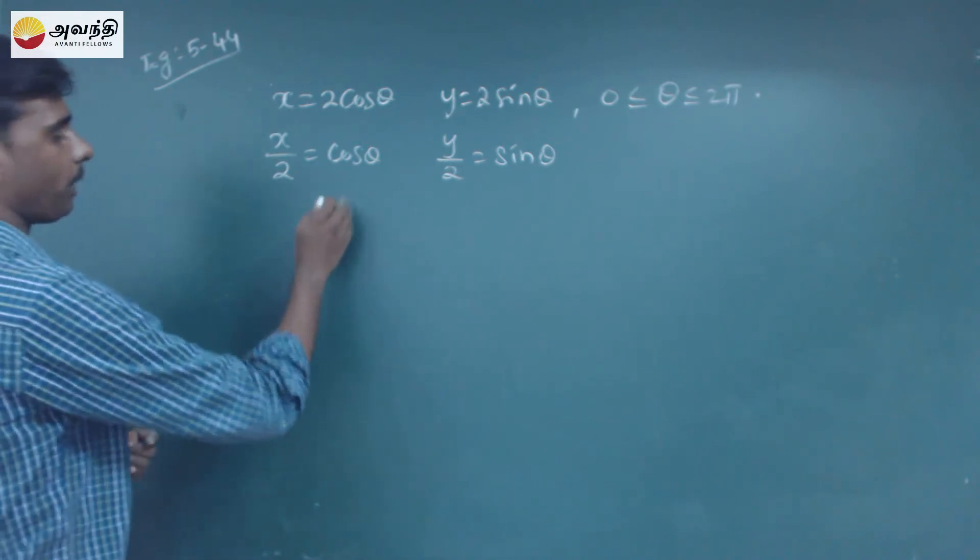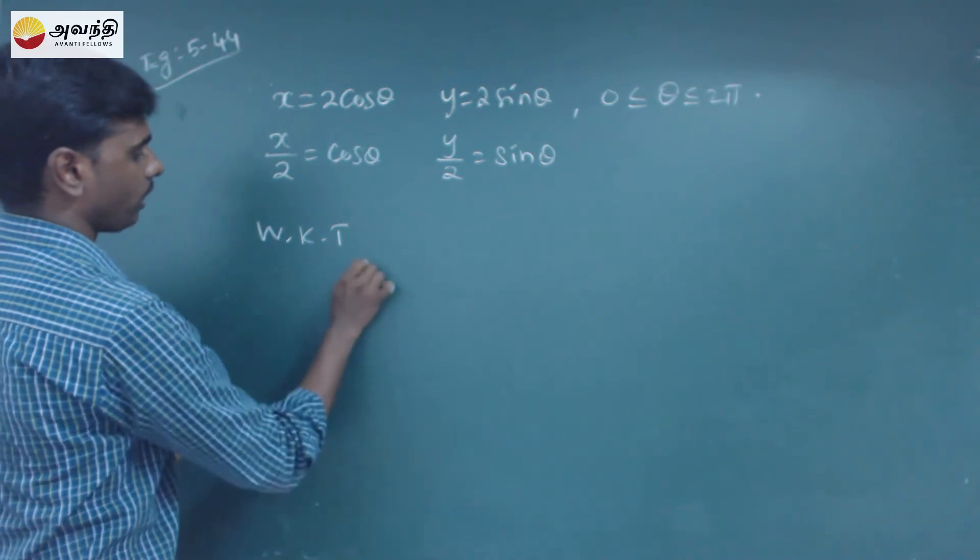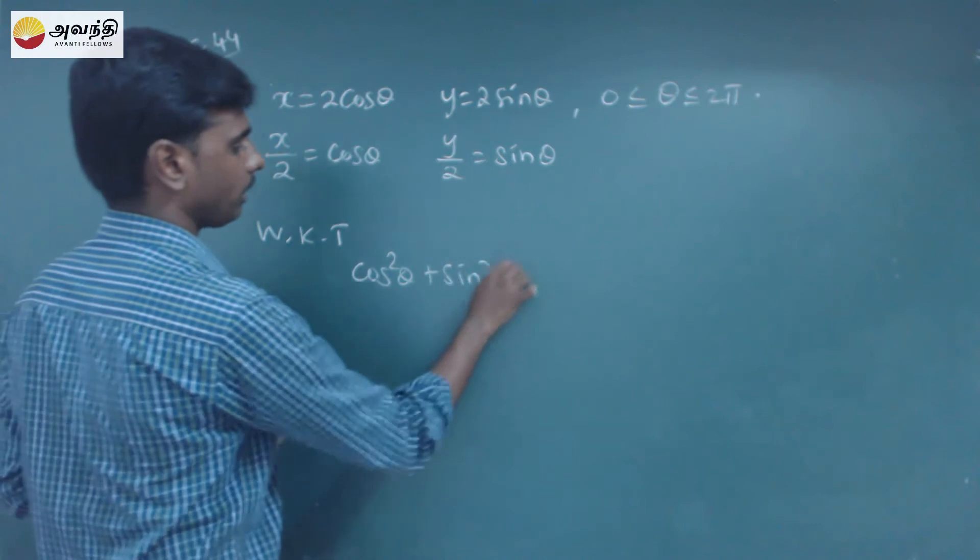So what do we do? We know that cos square theta plus sin square theta is equal to 1.